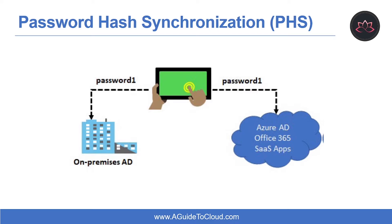How does Password Hash Synchronization work? In the background, the password synchronization components take the user's password hash from on-premises Active Directory, encrypt it, and pass it as a string to Azure. Azure decrypts the encrypted hash and stores the password hash as a user attribute in Azure AD. When the user signs in, the sign-in dialog generates a hash of the user's password and passes that hash back to Azure, which then compares it with the one stored in that user account. If the two hashes match, the passwords match and the user receives access. It is important to understand that this is same sign-in, not single sign-on. This solution provides a simple alternative to ADFS integration.